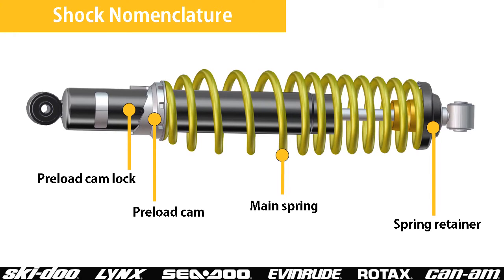Let's go over the basic components of a typical shock. Note that not all shocks will have all of the components and some may have more. In general, we have the preload cam lock, the preload cam, the mainspring, and the spring retainer.